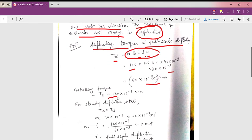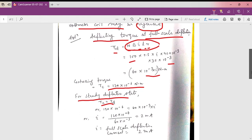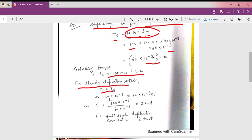The controlling torque is also given in the numerical. Under steady state condition, TC and TD, that is the controlling and deflecting torque, are equal to each other. So equating these two torques, we get the value of I which is 2 milliampere.